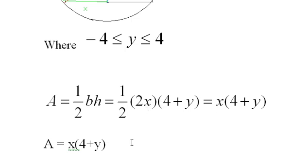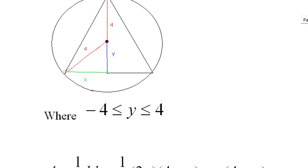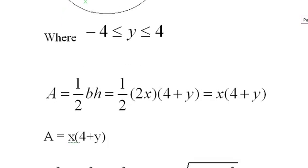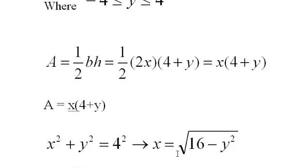I end up with an area of x times four plus y when I simplify. Now I'm going to eliminate this x. The way I do that is I know that x squared plus y squared equals four.